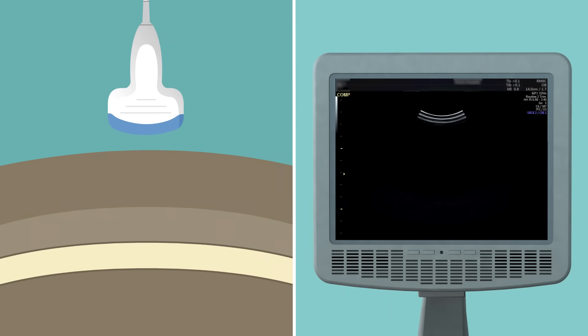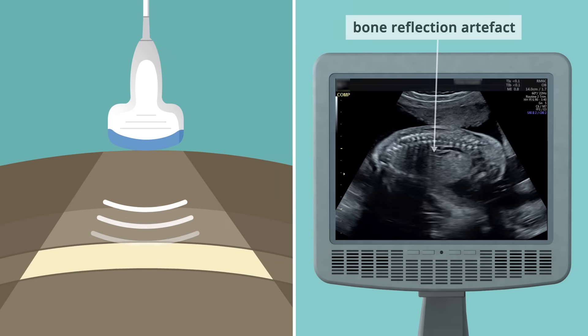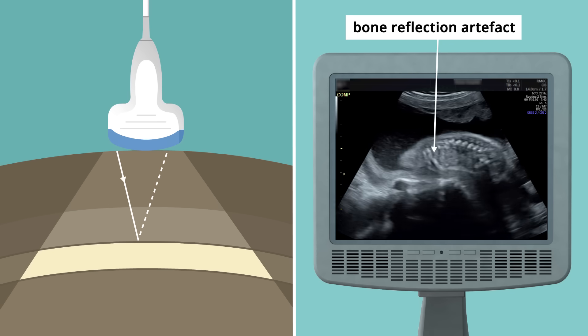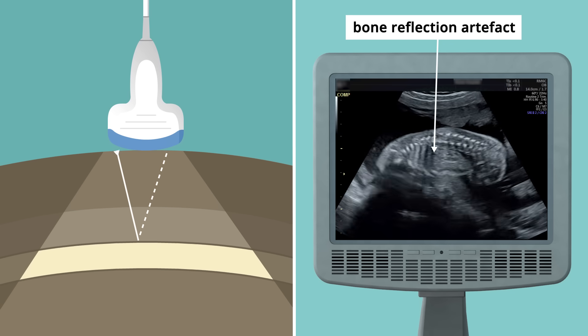Ultrasound has trouble penetrating very dense material such as bone, which can reflect the majority of the signal back to the probe, leaving an area of darkness beneath it in the image.